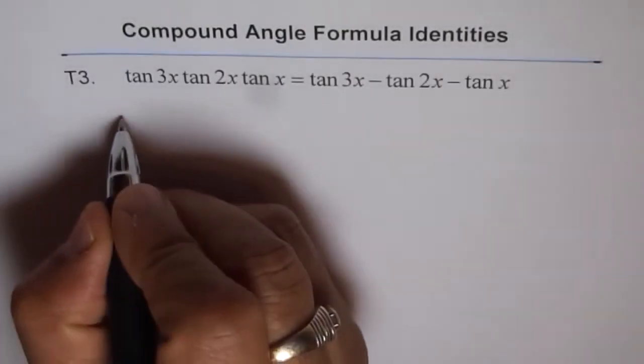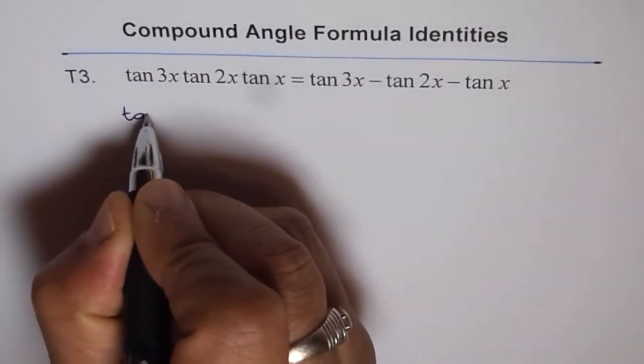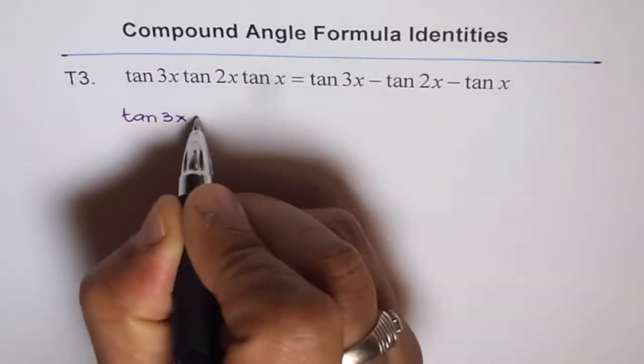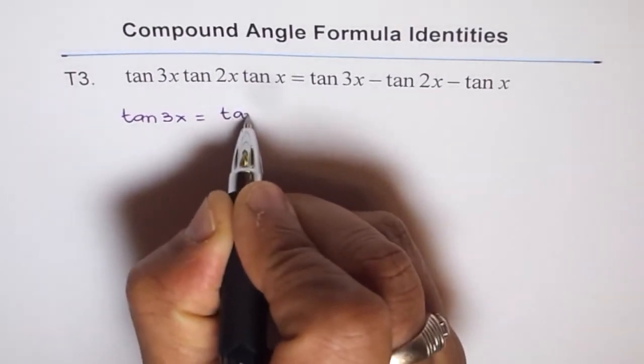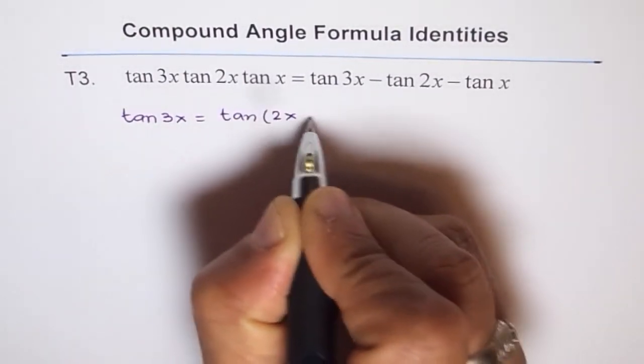So we'll start from here. We say, well, what is tan 3x equals to? Tan 3x can be written as tan of 2x plus x, correct?